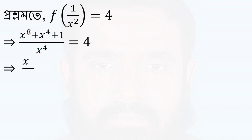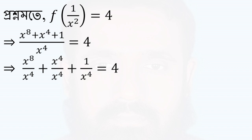Let us write it in terms of x to the power 4 and 1 in terms of x to the power 4. We can write x to the power 4, x to the power 4, and x to the power 4. Then we write the power 2. However, if x to the power 4 is 8 to the power 4, then we write 4 minus x to the power 4.